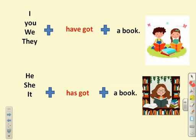Who are the friends of 'has got'? Let's say them: he has got a book, she has got a book, it has got a book. Excellent! So the friends of 'has got' are he, she, and it.